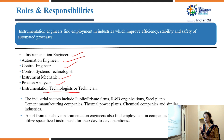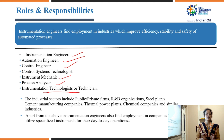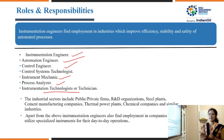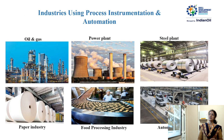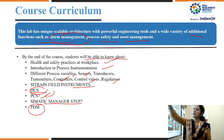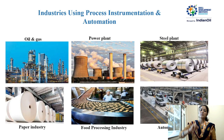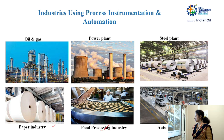Apart from the above, instrumentation engineers can also find employment in companies that use specialized smart instruments or smart transmitters. These industries need specific engineers for operations and calibration. The industries using process instrumentation and automation include oil and gas, power plants, steel plants, paper industry, food processing industry, and automobile industry.